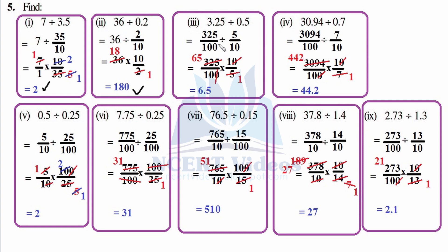For 3.25 divided by 0.5: write 325 over 100, divided by 5 over 10. Converting into fraction, then flipping it because multiplication has been introduced: 10 over 5. Now cancel zeros: 1×5 is 5, 5×6 is 30, 2 is remainder, so it becomes 25, and 5×5 is 25. So 65 over 10 — write 65 first, count the number of zeros — 1 — therefore after 1 place: answer is 6.5.